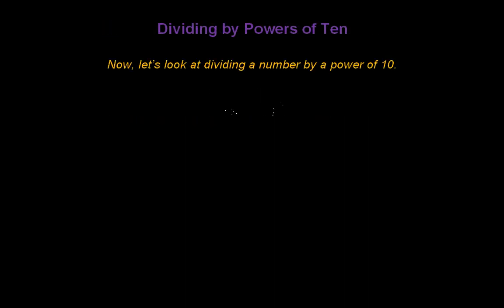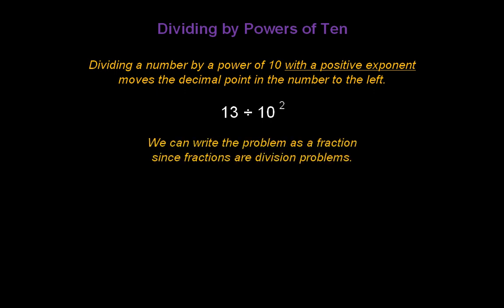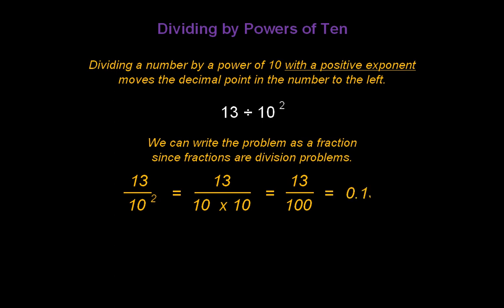Now let's divide by powers of 10. Here's 13 divided by 10 to the second power. Dividing a number by a power of 10 with a positive exponent moves the decimal point in the other direction — to the left. We can write the problem as a fraction, since fractions are division problems: 13 over 10 to the second power. Expanding gives us 13 over 10 times 10. 10 times 10 is 100, so we have 13 over 100. The answer is 0.13.